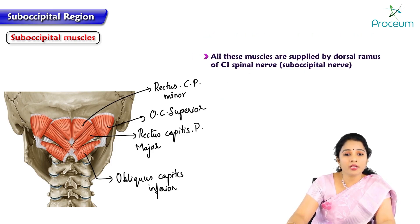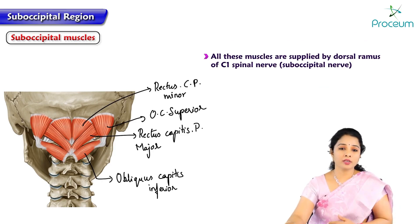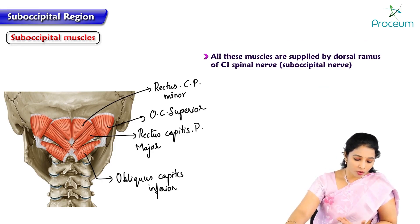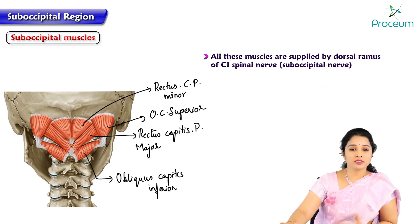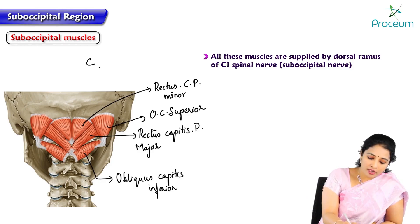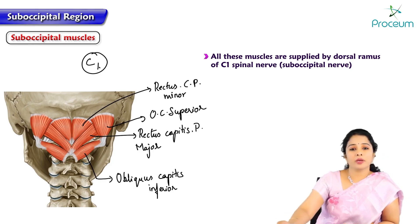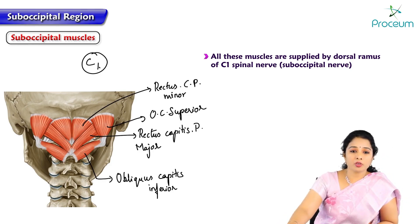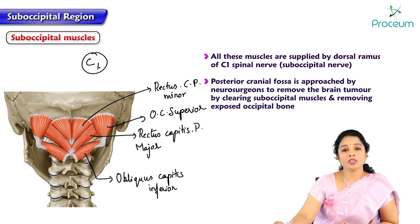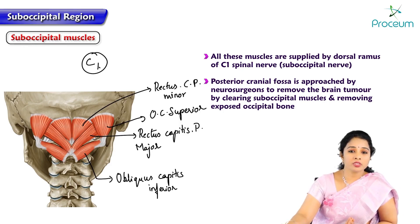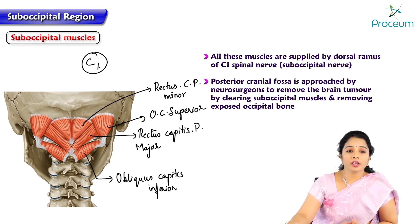All these muscles are supplied by the dorsal ramus of C1 spinal nerve, otherwise called the suboccipital nerve. The posterior cranial fossa is approached by neurosurgeons by removing brain tumors through clearing the suboccipital muscles and removing the exposed occipital bone.